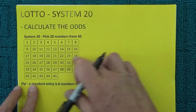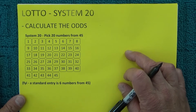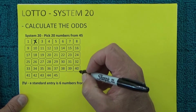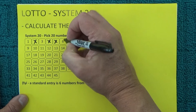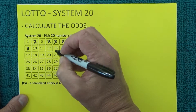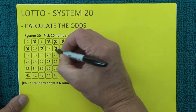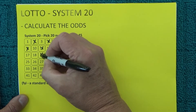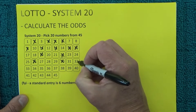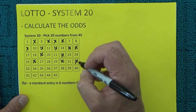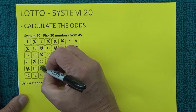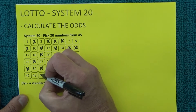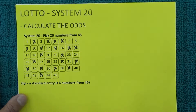I've got this template of a game coupon and I'm just going to randomly select 20 numbers from the 45, so it's 1, 2, 3, 4, 5, 6, 7, 8, 9, 10, 11, 12, 13, 14, 15, 16, 17, 18, 19 and 20.